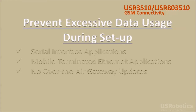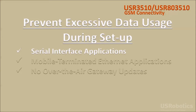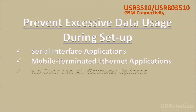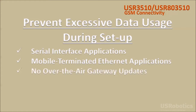Now you should decide how you will prevent excessive data usage during gateway setup. The method shown in this video works for applications that use the gateway's serial port and for applications that use the gateway to make only mobile terminated connections to its ethernet port. This method also assumes that your application is not going to use the USR Universe to deliver over-the-air updates to the gateway.